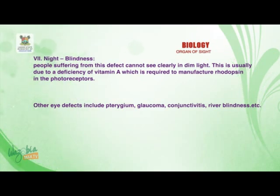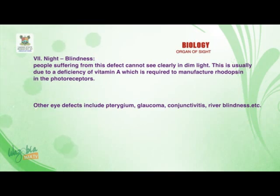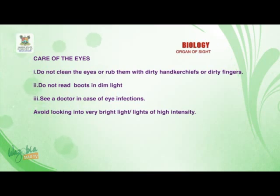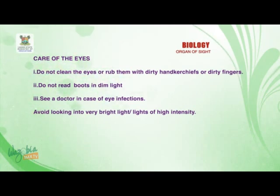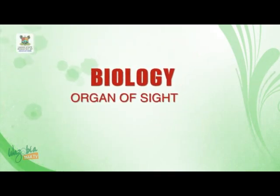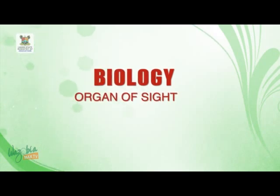Other eye defects include pterygium, glaucoma, conjunctivitis, and river blindness. Now let's quickly look at the care of the eyes. Do not clean the eyes or rub them with a dirty handkerchief or dirty fingers. Do not read books in dim light. See a doctor in case of eye infection. Avoid looking into very bright light. Before I leave the class, your assignment is to observe a model of the human eye and make a large labeled diagram of the eye. Thank you — we shall continue in the next class.